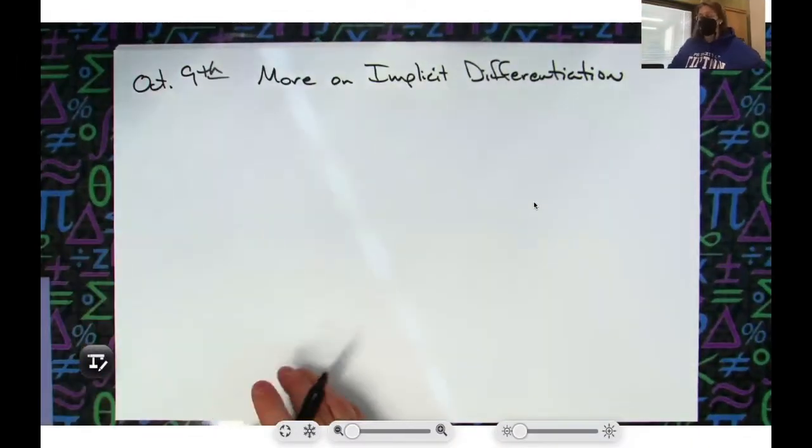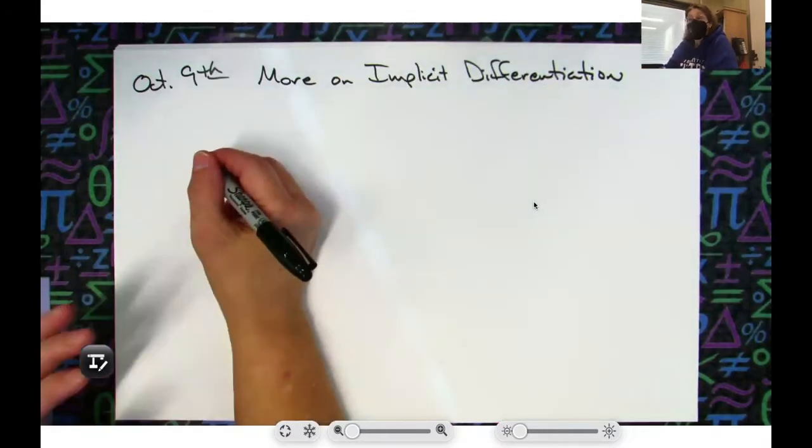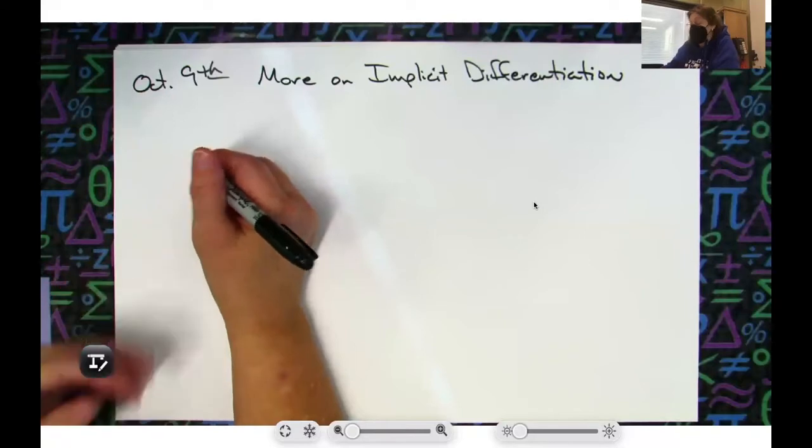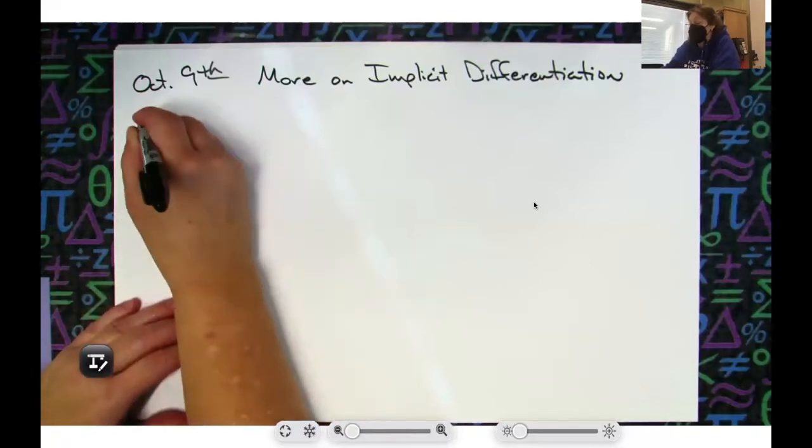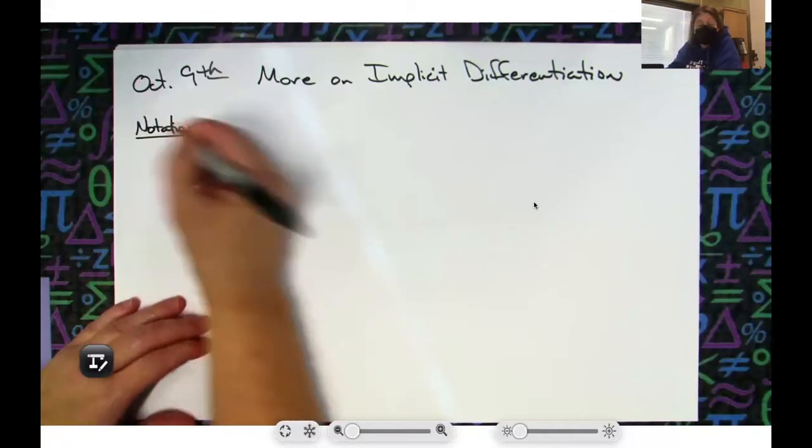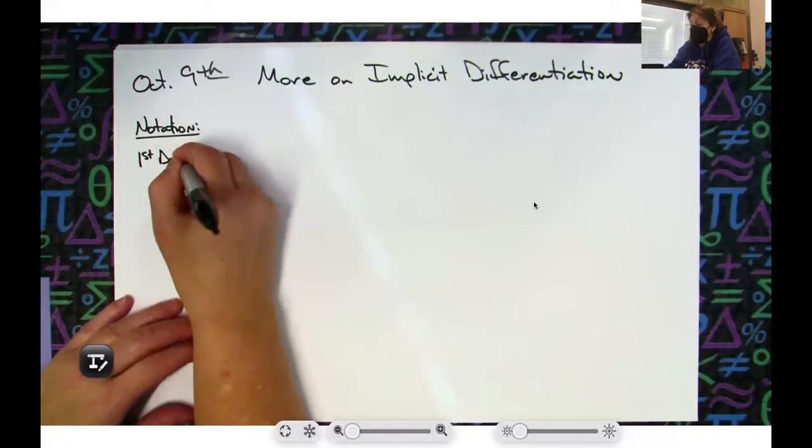All right, now several weeks ago I had to watch a video on just general notation, different ways to denote your derivatives and things. So let's just review some of that to make sure that it still went into long-term memory. First derivative - we have primarily been doing y prime or f of x prime, we've been using that prime notation.